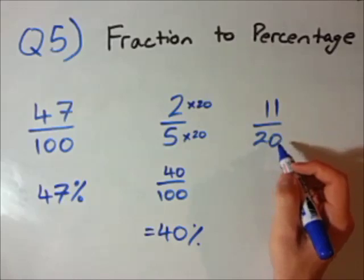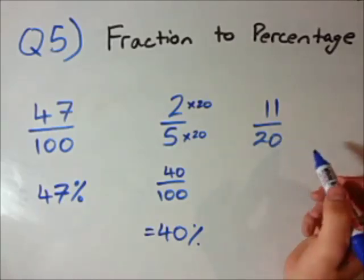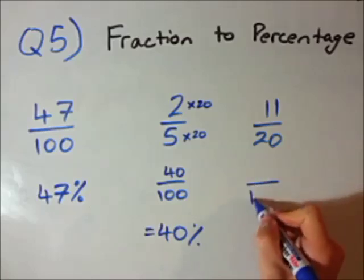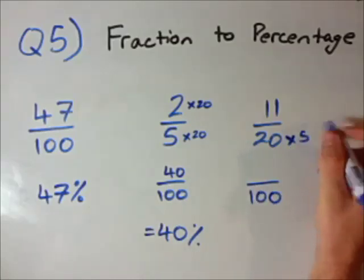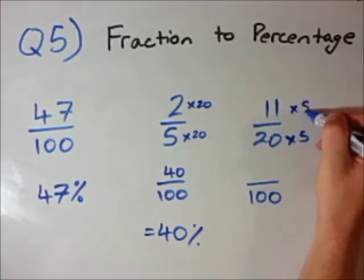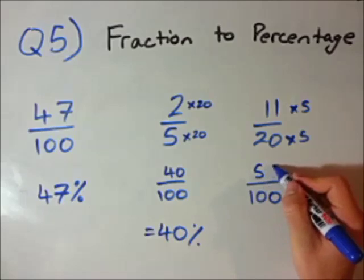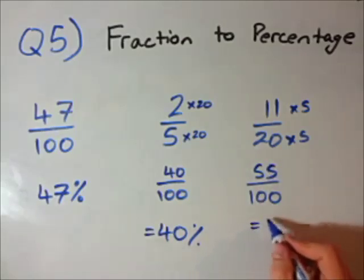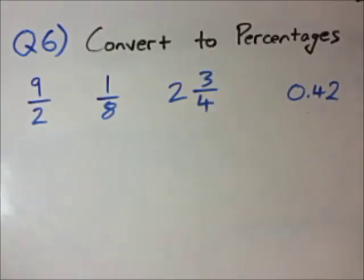Third one. 11 over 20. Pretty easy again. I want to change my denominator to 100. In order to do that I have to times this by 5. I have to also times the top by 5. The law of fractions. 5 times 11 is 55. My answer? 55 percent.